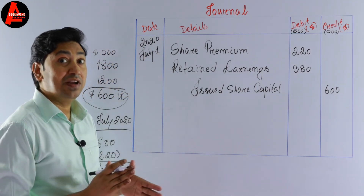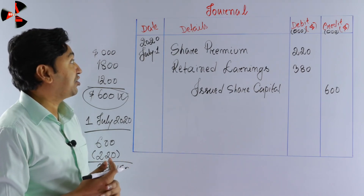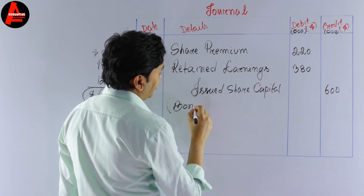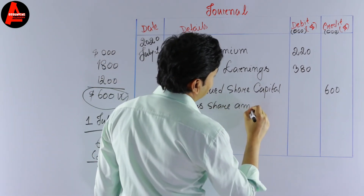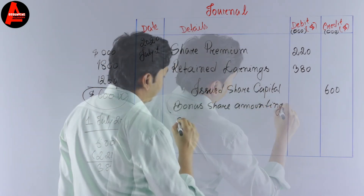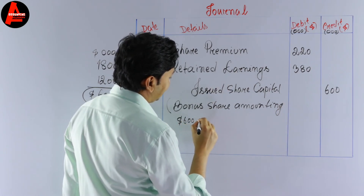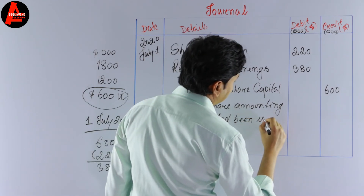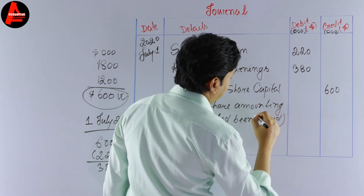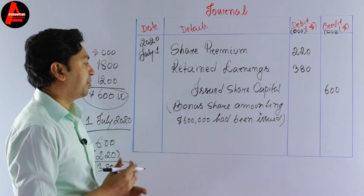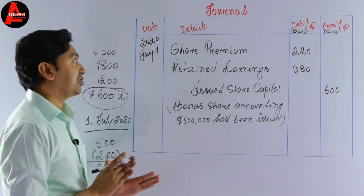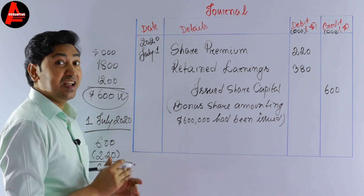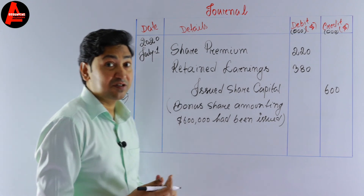Recording of the journal entry is complete. We also need to write a short note on this journal entry. We can write: 'Bonus shares amounting to 600,000 dollars had been issued.' Any convenient note is fine. This is how you prepare the journal entry for the issuance of bonus shares. This is a very important topic in your limited company syllabus. That is all for today's lesson.